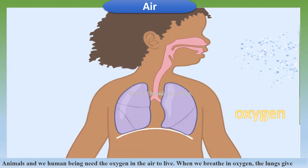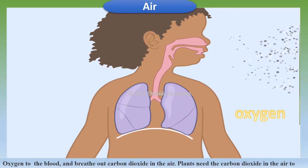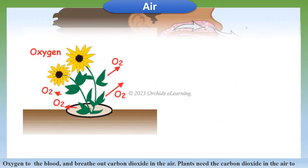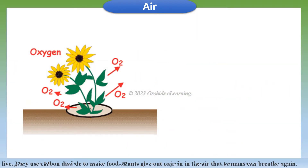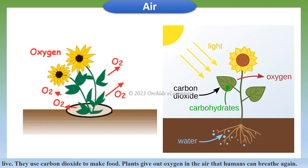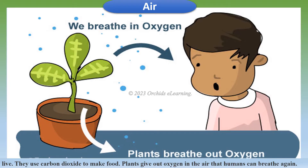Animals and humans need the oxygen in the air to live. When we breathe in oxygen, the lungs give oxygen to the blood and breathe out carbon dioxide. Plants need the carbon dioxide in the air to live. They use carbon dioxide to make food, and give out oxygen that humans can breathe again.